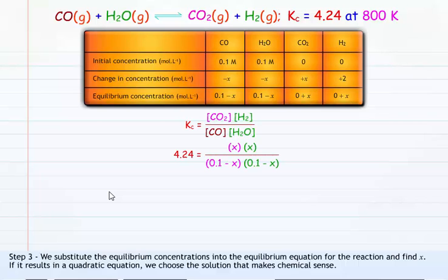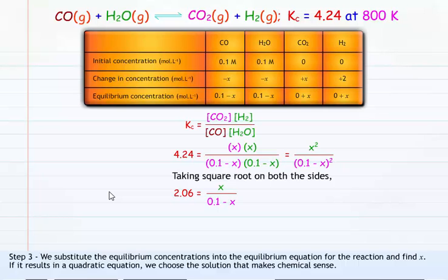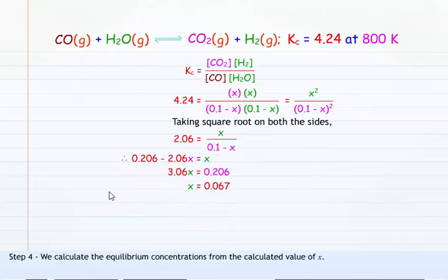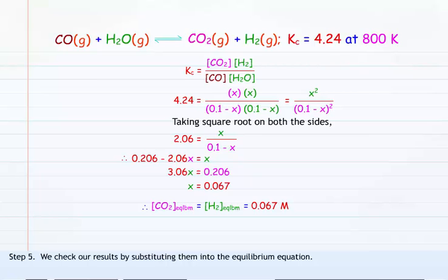Therefore, 4.24 equals X times X divided by (0.1 minus X) times (0.1 minus X), which equals X squared divided by (0.1 minus X) squared. Taking the square root of both sides: 2.06 equals X divided by (0.1 minus X). Therefore, 0.206 minus 2.06X equals X, meaning 3.06X equals 0.206, hence X equals 0.067. Step 4: Calculate the equilibrium concentrations from X. Therefore, concentration of CO2 at equilibrium equals concentration of H2 at equilibrium equals 0.067 M. Step 5: Check the results by substituting into the equilibrium equation. The concentration of CO equals the concentration of H2O equals 0.1 minus 0.067, which equals 0.033 M.